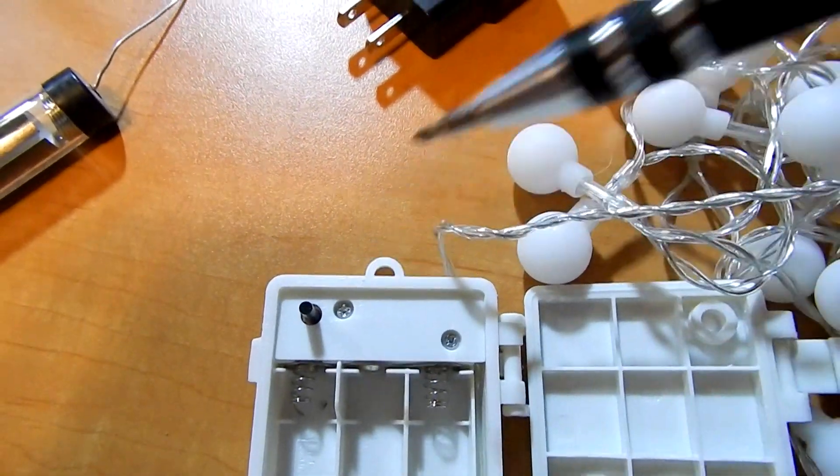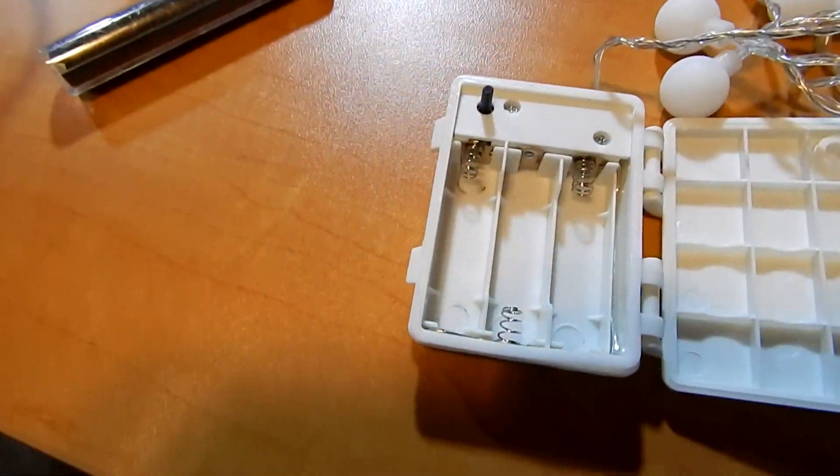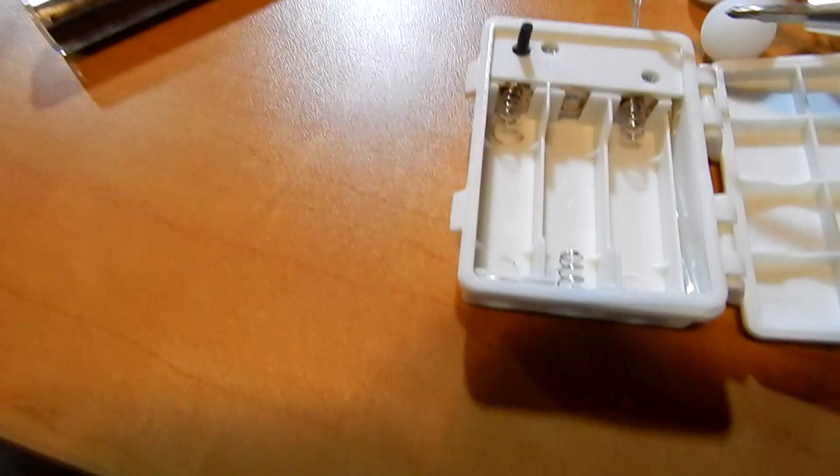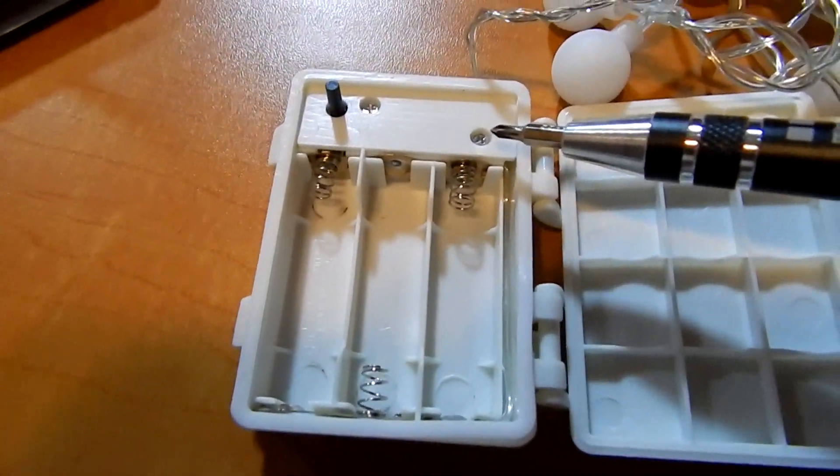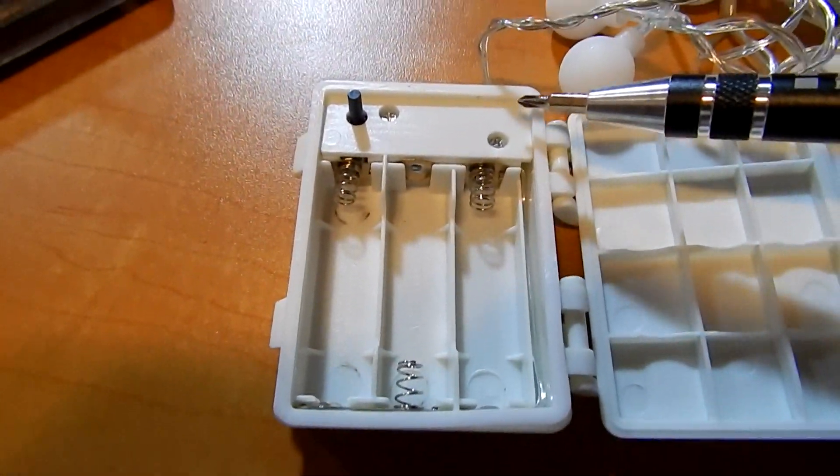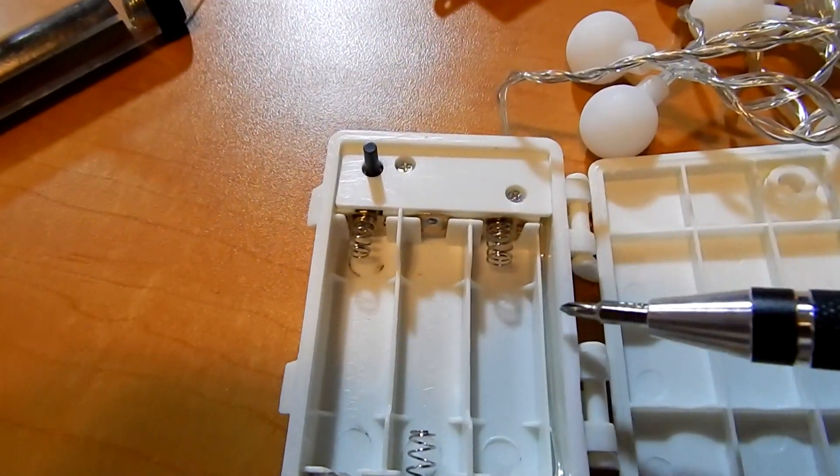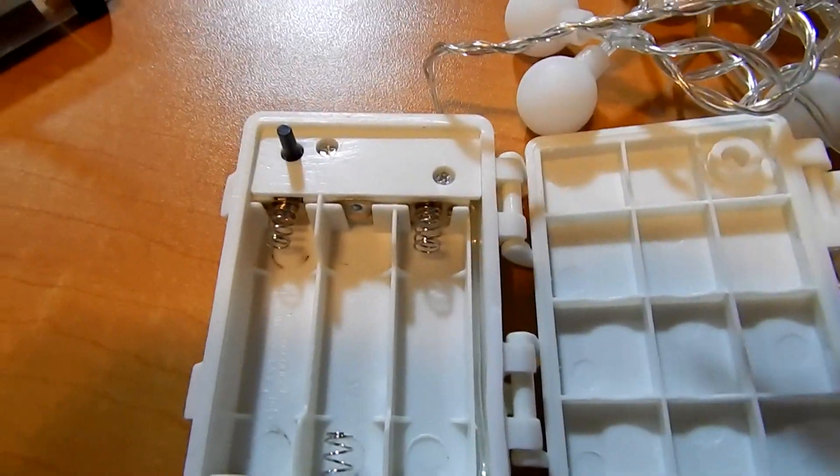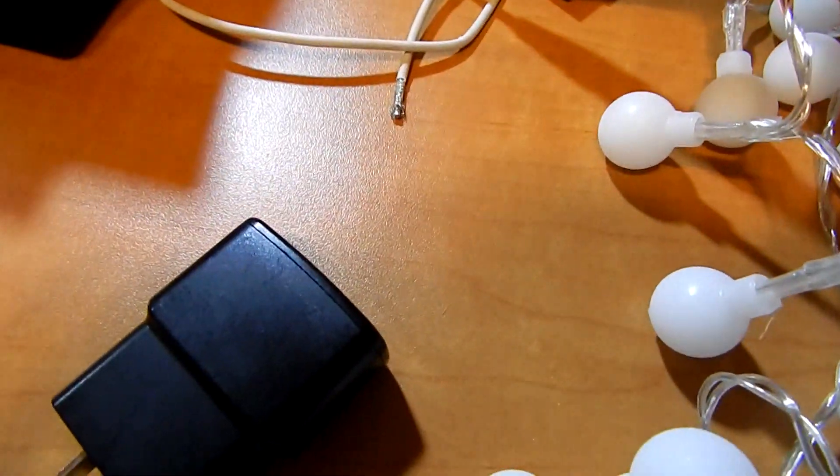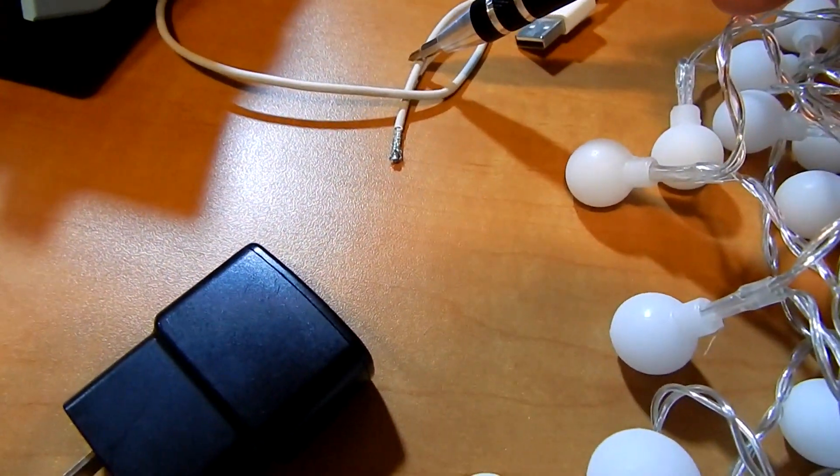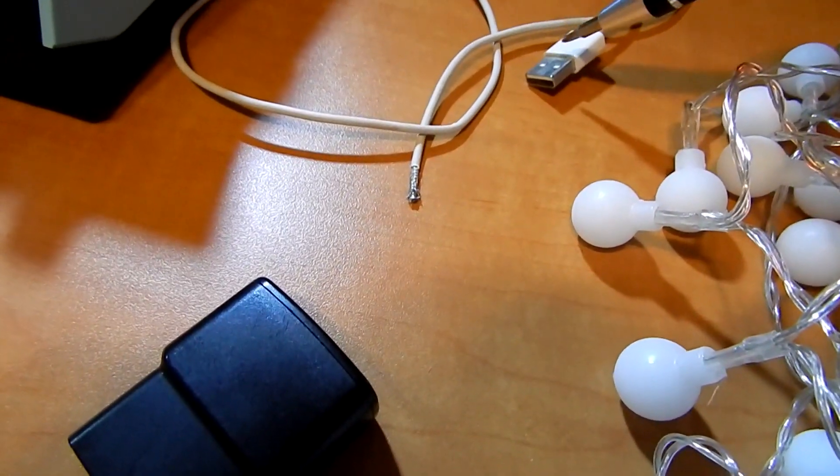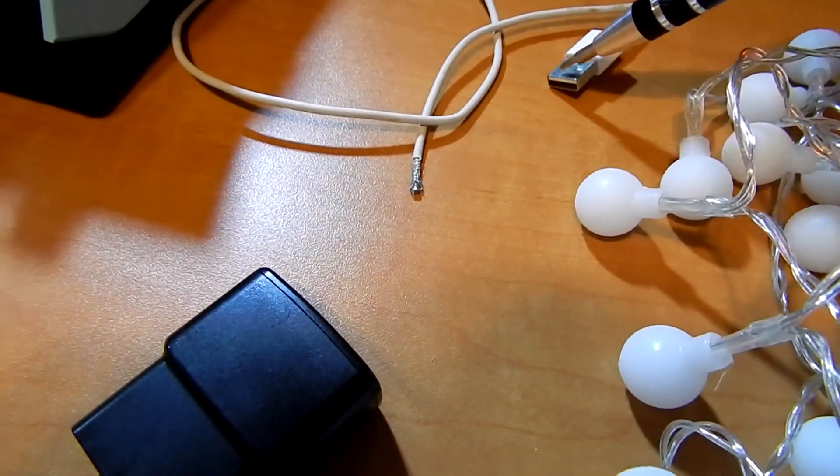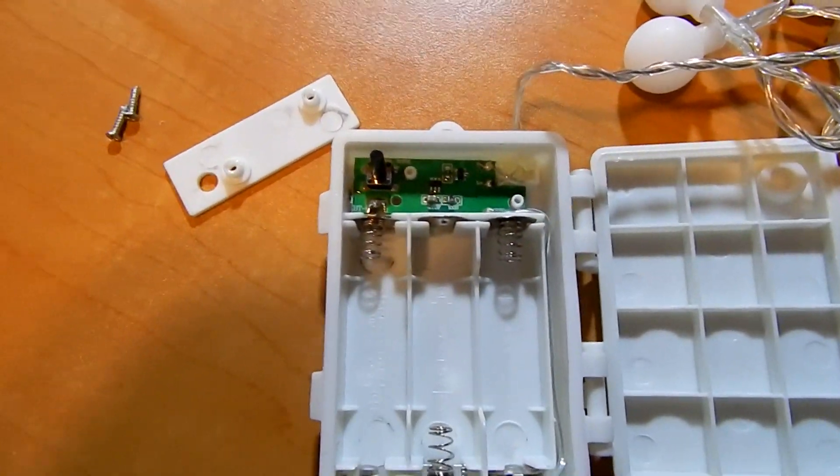This will expose the wiring on the inside where you'll be able to see the positive and negative terminals that the batteries would have been connected to, and then you'll be able to solder on the positive and negative leads off of the USB cable.